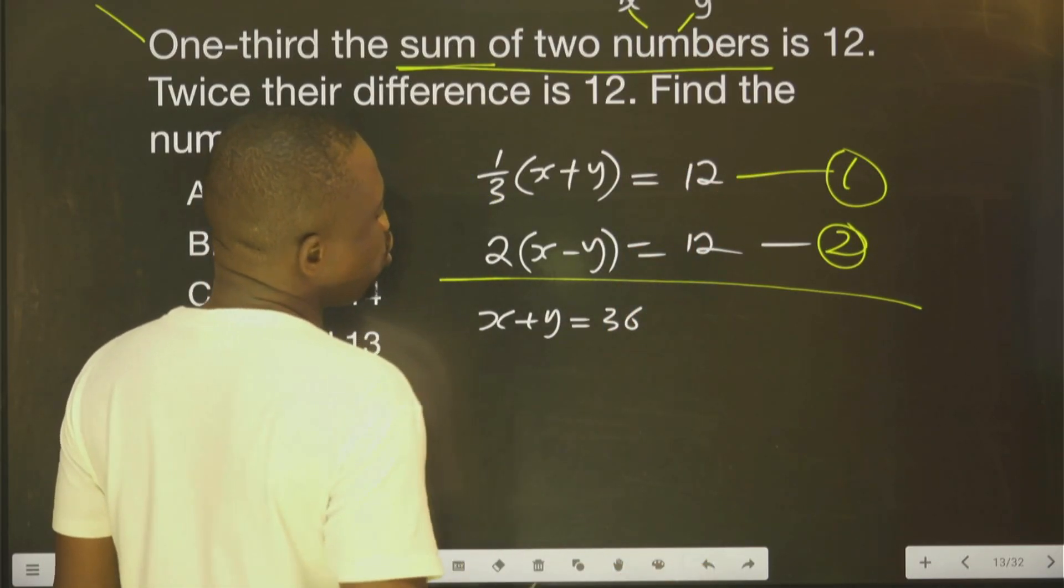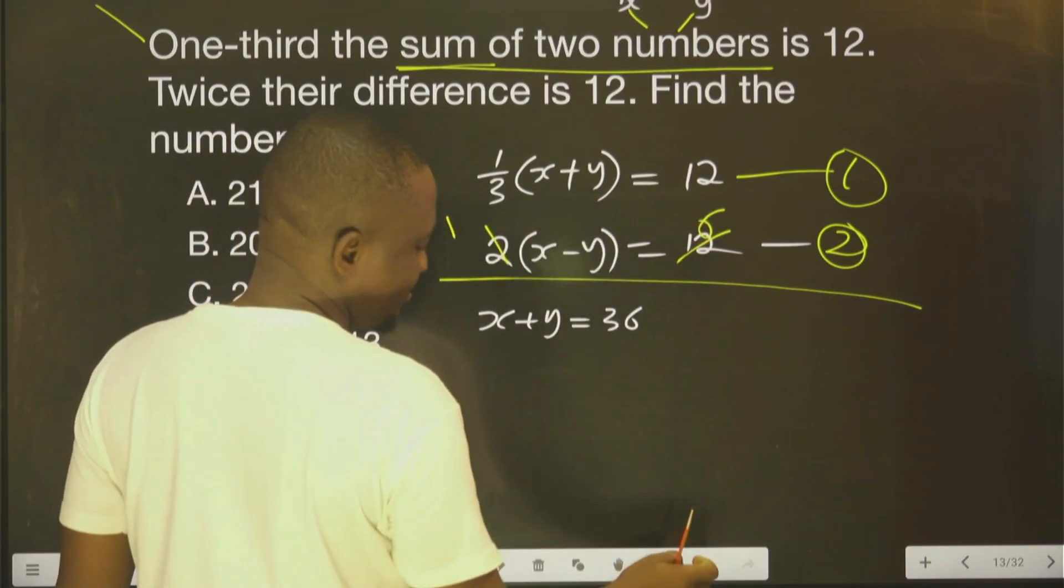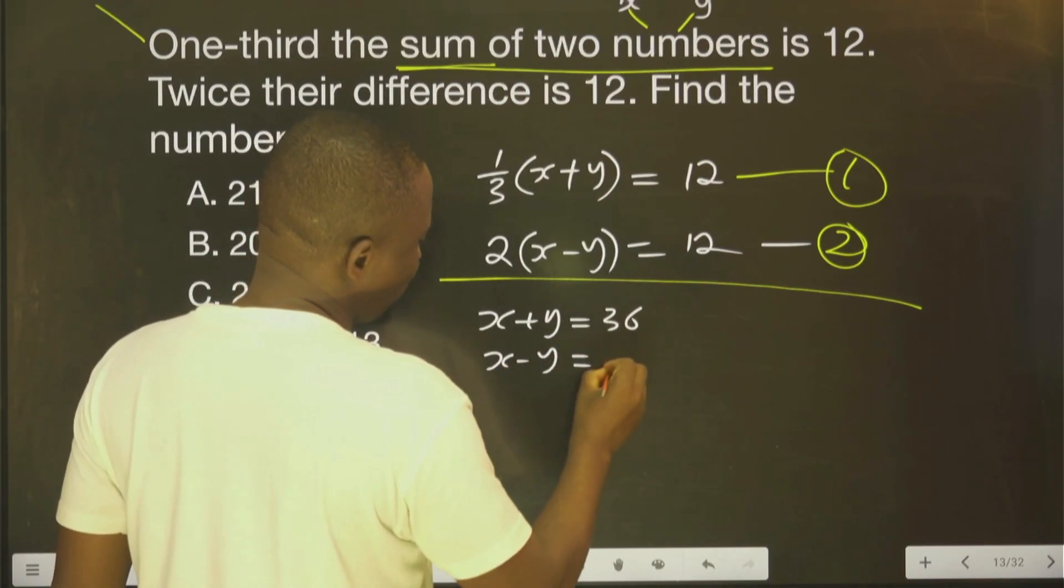Okay? You agree with me? I can cancel this, I have 1. I cancel this, I have 6. So it means therefore, we have S minus Y equals 6.